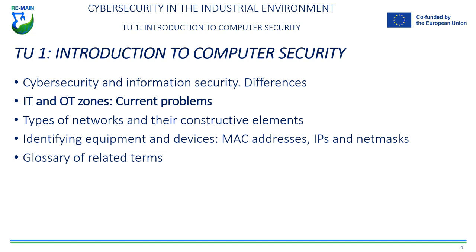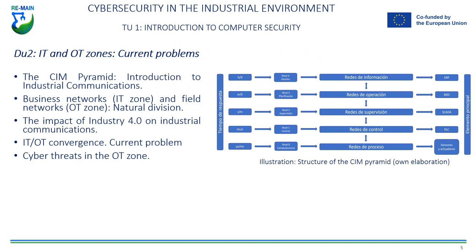IT and OT Areas — Current Problems. Industrial communications are a very important aspect in the development of automated processes. The natural division between IT and OT areas is being altered due to the impact of Industry 4.0. We must therefore consider a convergence between both areas, despite the problems that this entails. Cyberthreats also exist in the OT area, and they are different from those affecting the IT area.